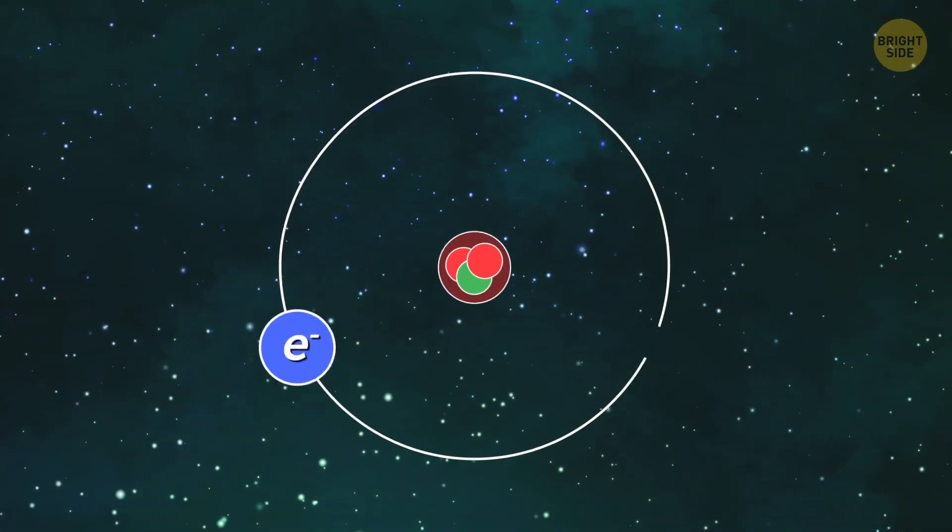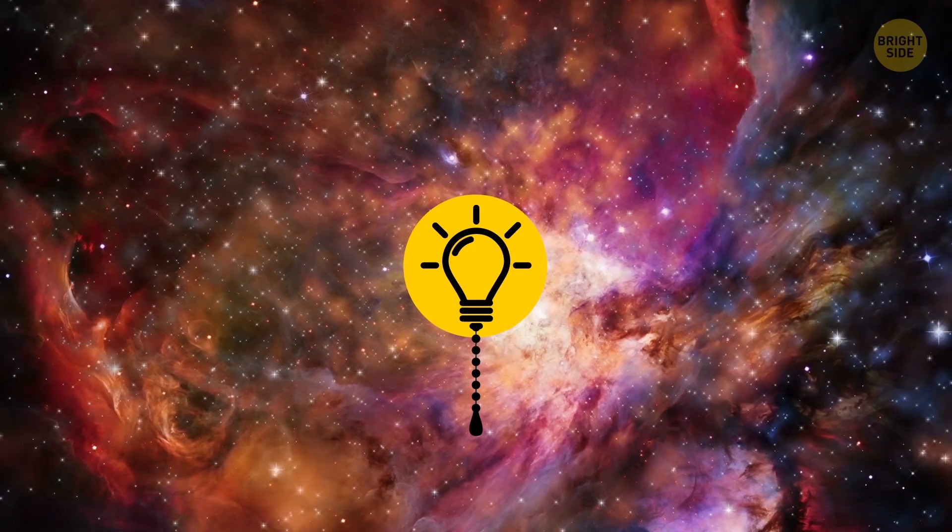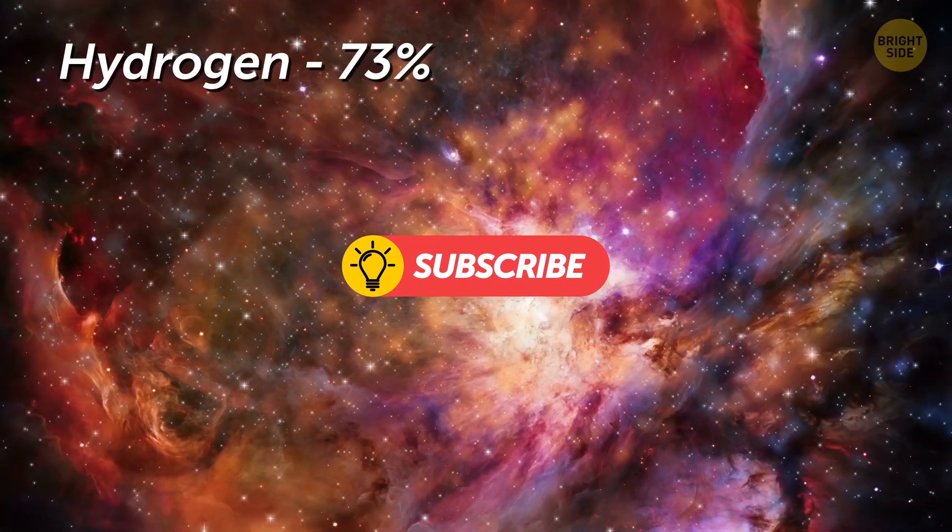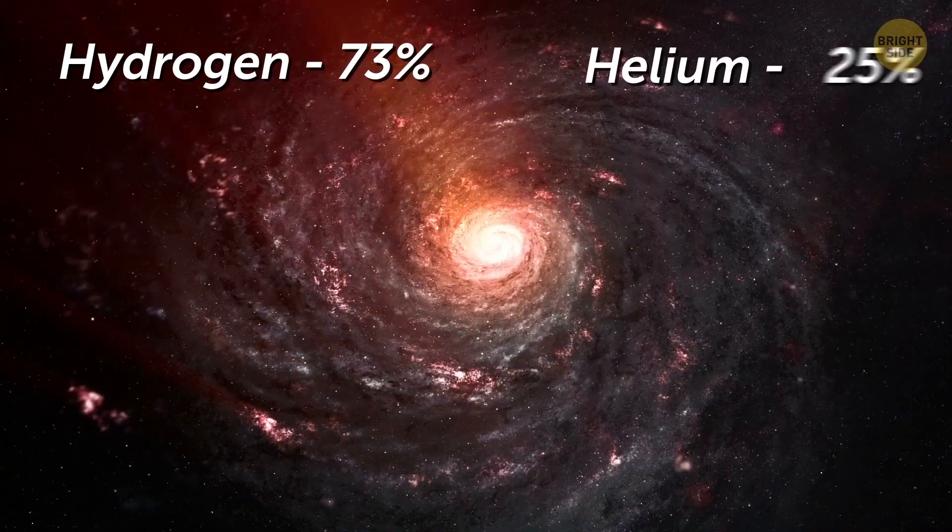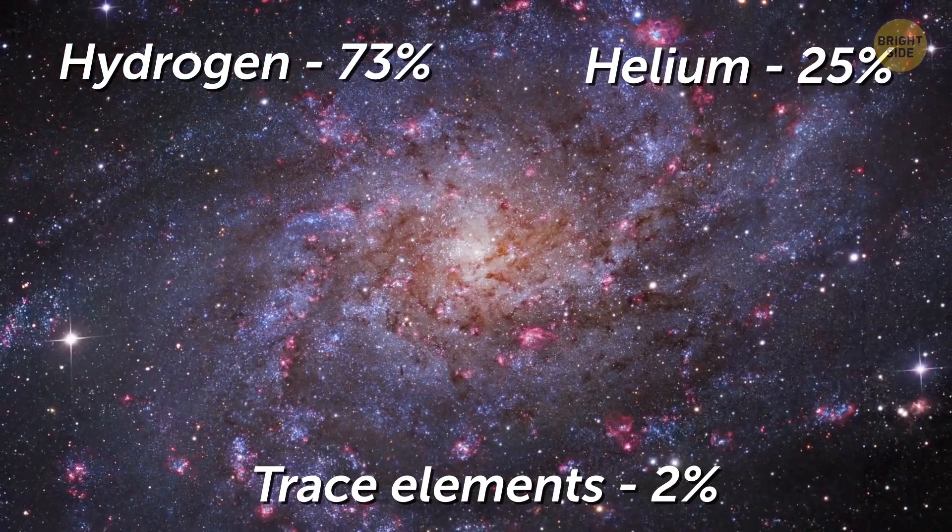To understand this, think of how steam condenses to liquid droplets as the vapor gets cold. That allowed some protons and neutrons to fuse into the helium nuclei. It took about 380,000 years for atoms to be formed. At one point, the universe was only hydrogen. Today, it's the most common element in the universe, occupying 73% of it. The second one is helium, which takes up 25%, and the other 2% are trace elements.